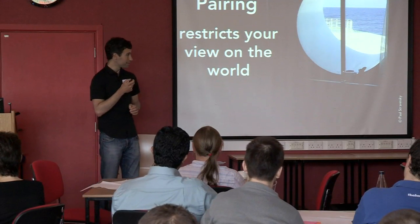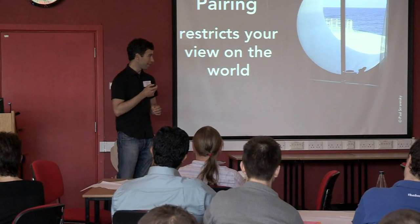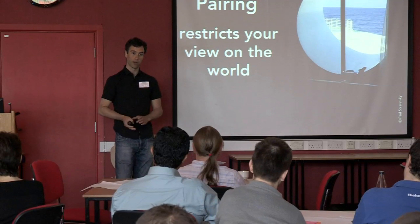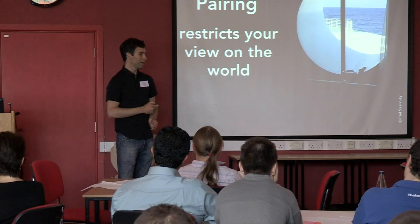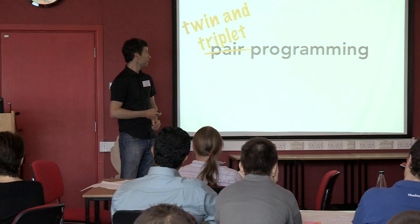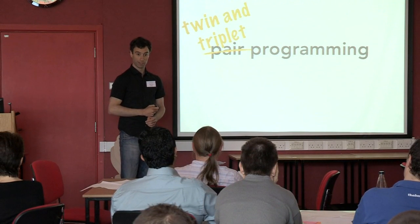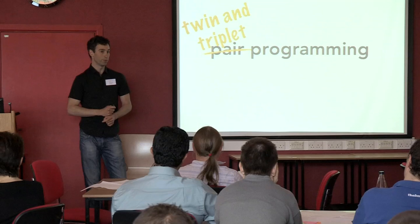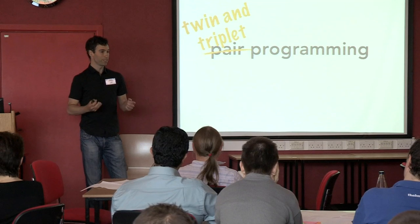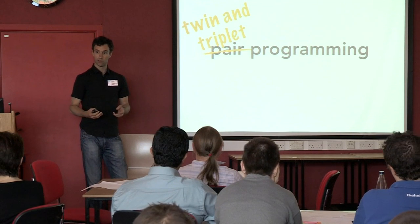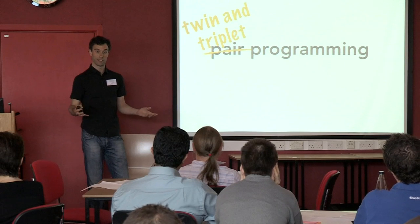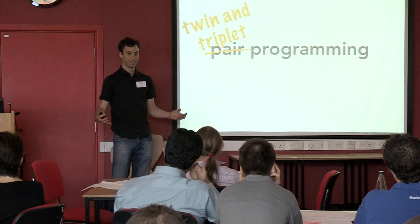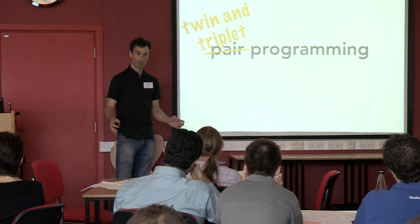What we found is that by giving everybody their own interface into this world, pairing didn't happen naturally. What tended to happen was what we call twin and triplet programming. People still wanted to collaborate, so they would tend to collaborate with the person sitting next to them or the people on either side quite naturally, because that physical world is still very much there.